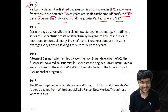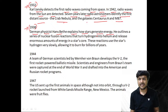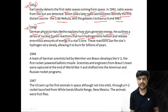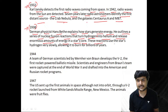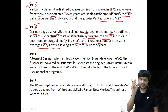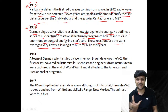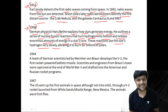In 1938, German physicist Hans Bethe explains how stars generate energy. He outlines a series of nuclear fusion reactions that turn hydrogen into helium and release an enormous amount of energy — thermonuclear fusion. Stars use hydrogen very slowly, burning it for billions of years through these thermonuclear fusion reactions happening in the stellar core.